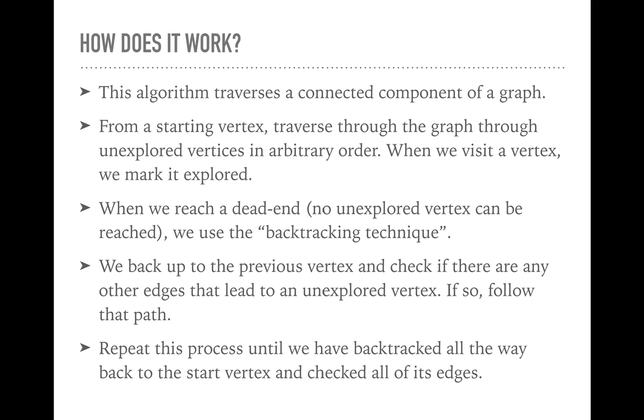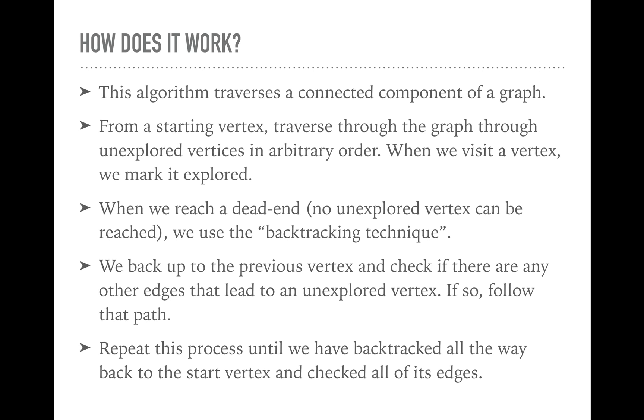Last time we went left. This time we go right. Let's see how far we can go. If we hit a dead end, we back up and try the next one. This will continue until we've backed up all the way back to the start. After that's done, we will have explored every vertex that it's possible to explore in this connected part of the graph.